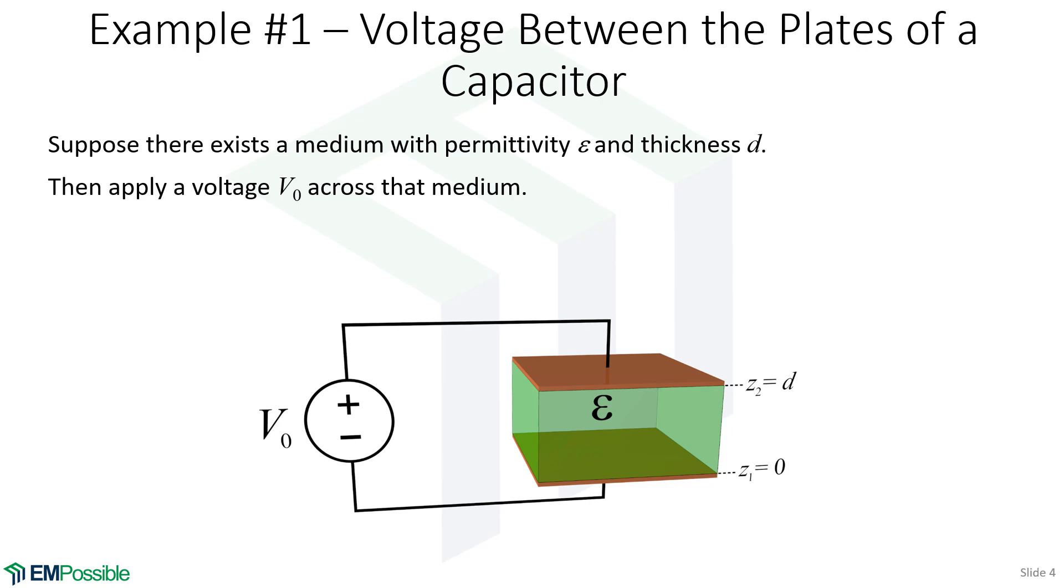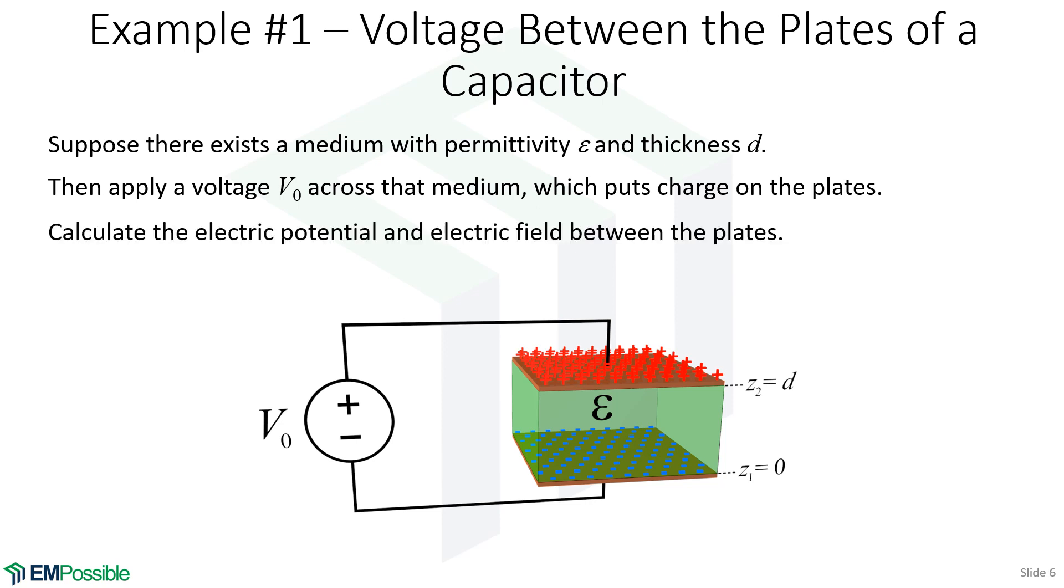We apply a voltage to those plates. Since this is an electrostatics problem, there is no current flow between the plates, which means there's going to be an accumulation of charge on the plates. So given all this, calculate the electric potential between the plates and the electric field between the plates.